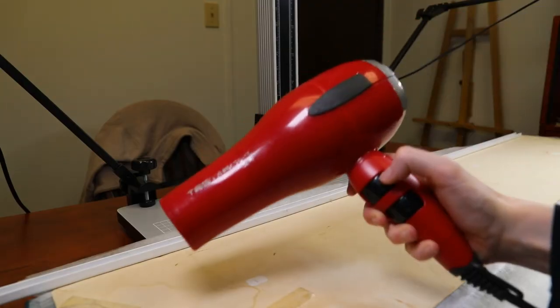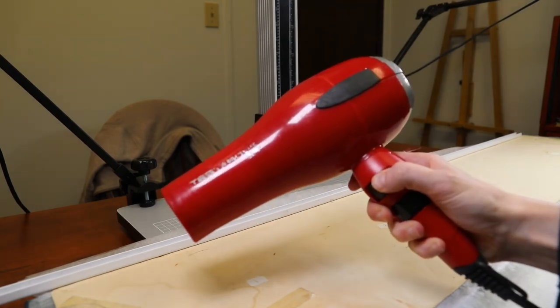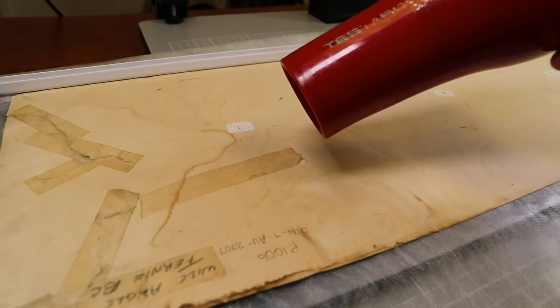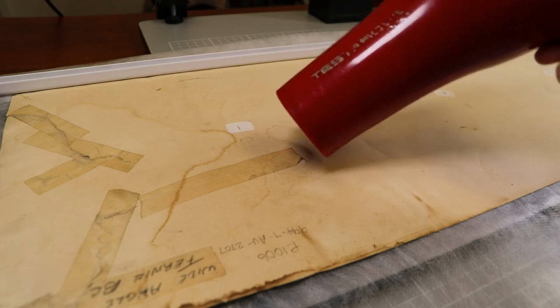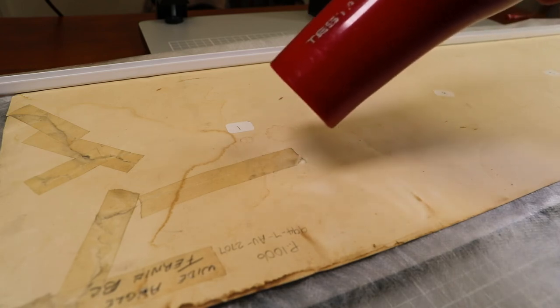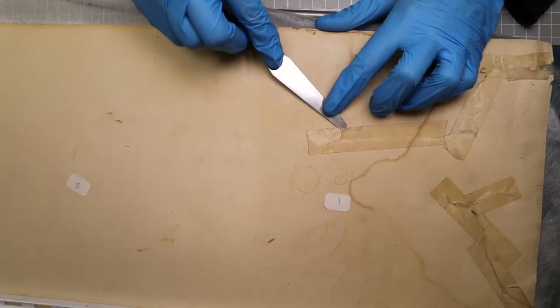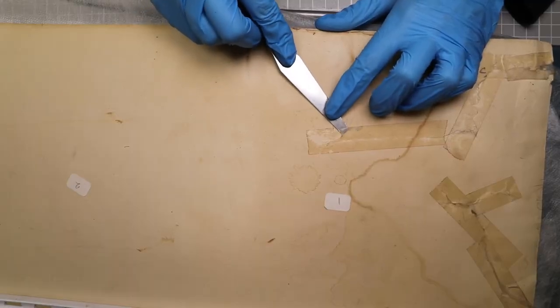Luckily, I have a secret weapon. My trusty heat application tool. Suspiciously similar to an ordinary budget hair dryer, this will soften the adhesive, allowing me to carefully get underneath it with a flat metal palette knife.